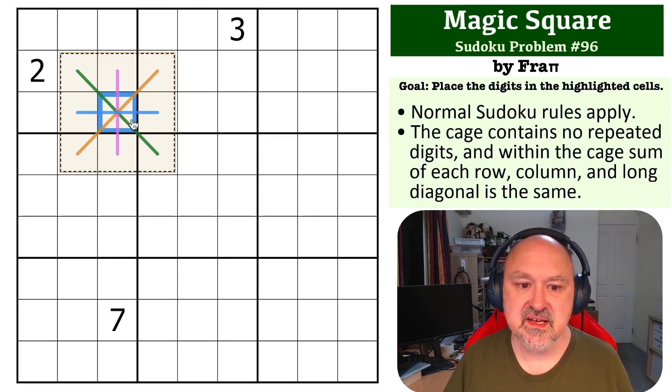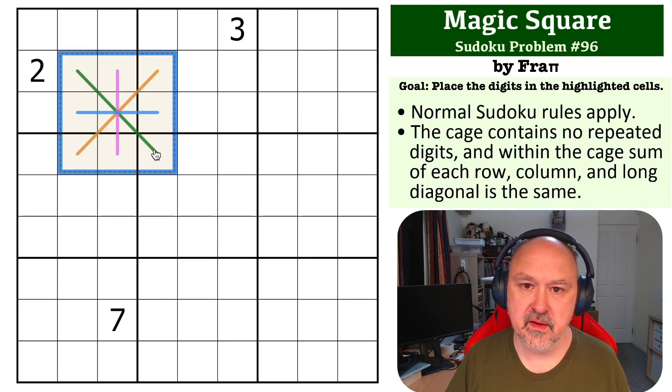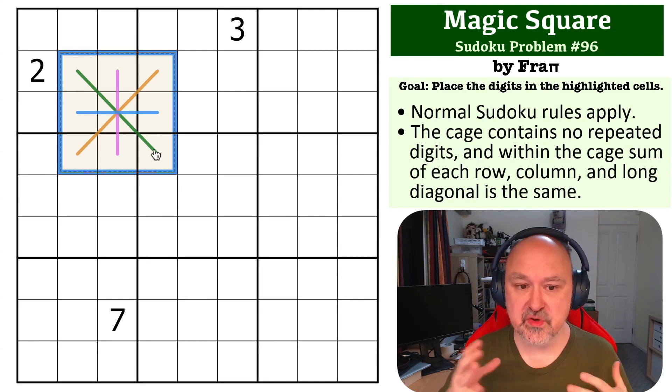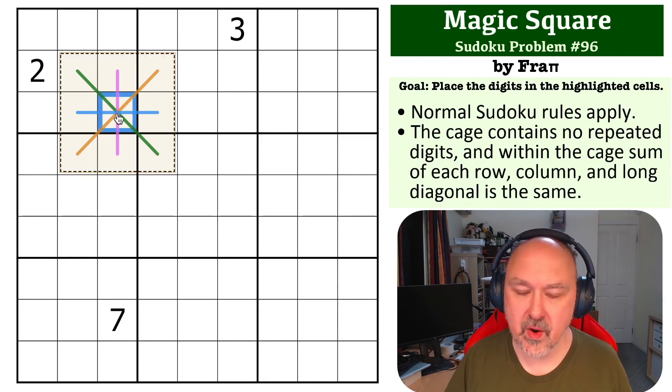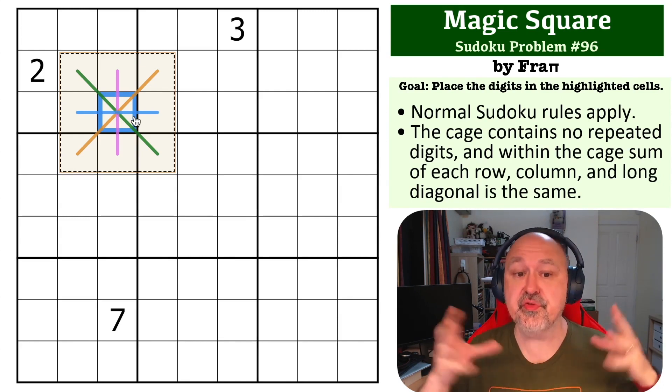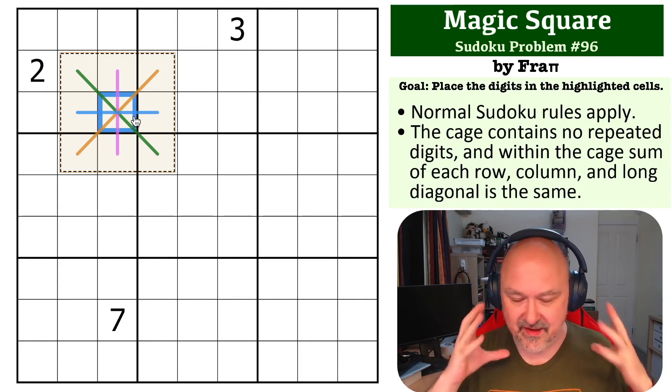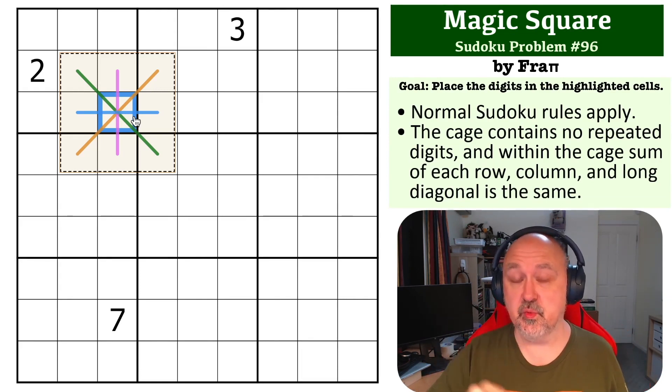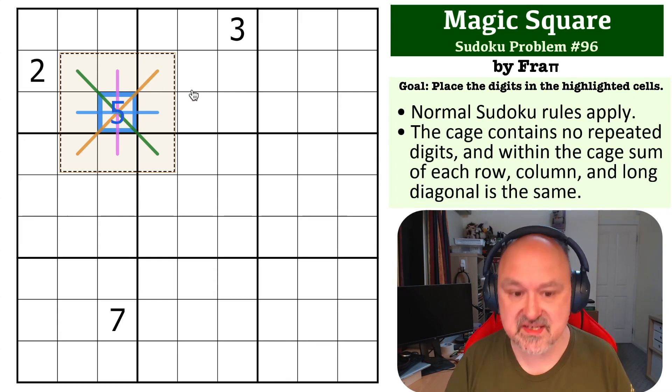So what we've got is 60, but this central cell has to be counted four times. The difference between 45, which is the sum of the entire square, and 60, which is the sum of those four lines, is 15. So three times that cell is the difference between 45 and 60, which is 15. 15 divided by three, this cell becomes a five, because that cell needs to contribute four times, or three extra times to make the difference.